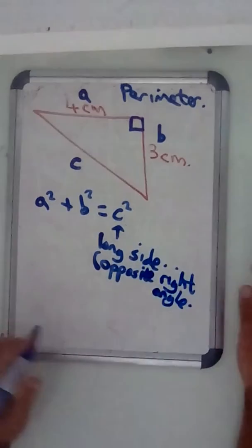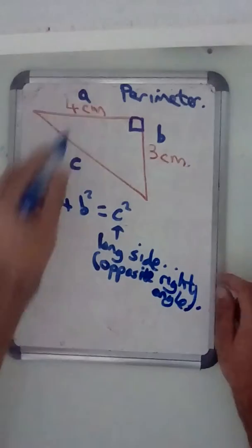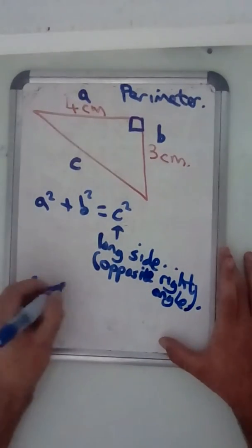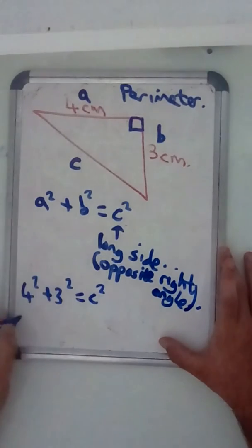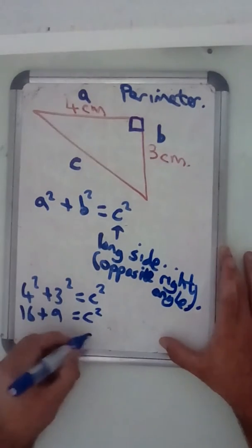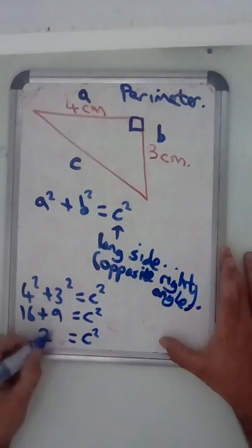Okay, so A squared plus B squared equals C squared, so that means 4 squared plus 3 squared equals C squared. 4 squared is 16, 3 squared is 9, equals C squared, so that must mean C squared equals 25.